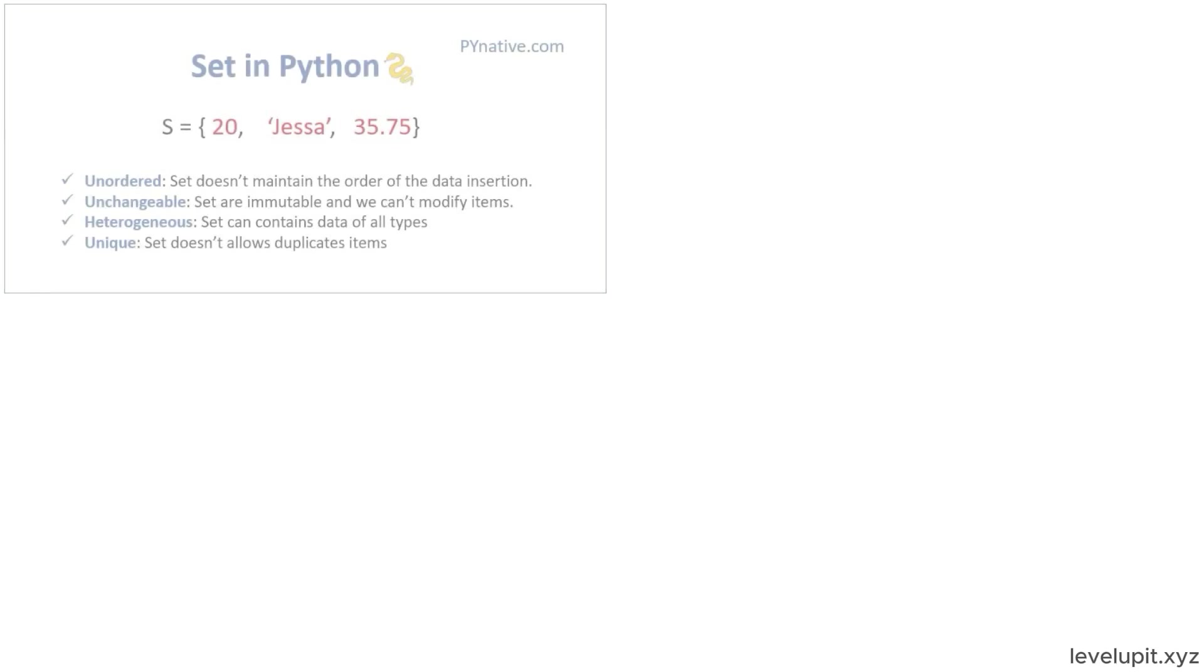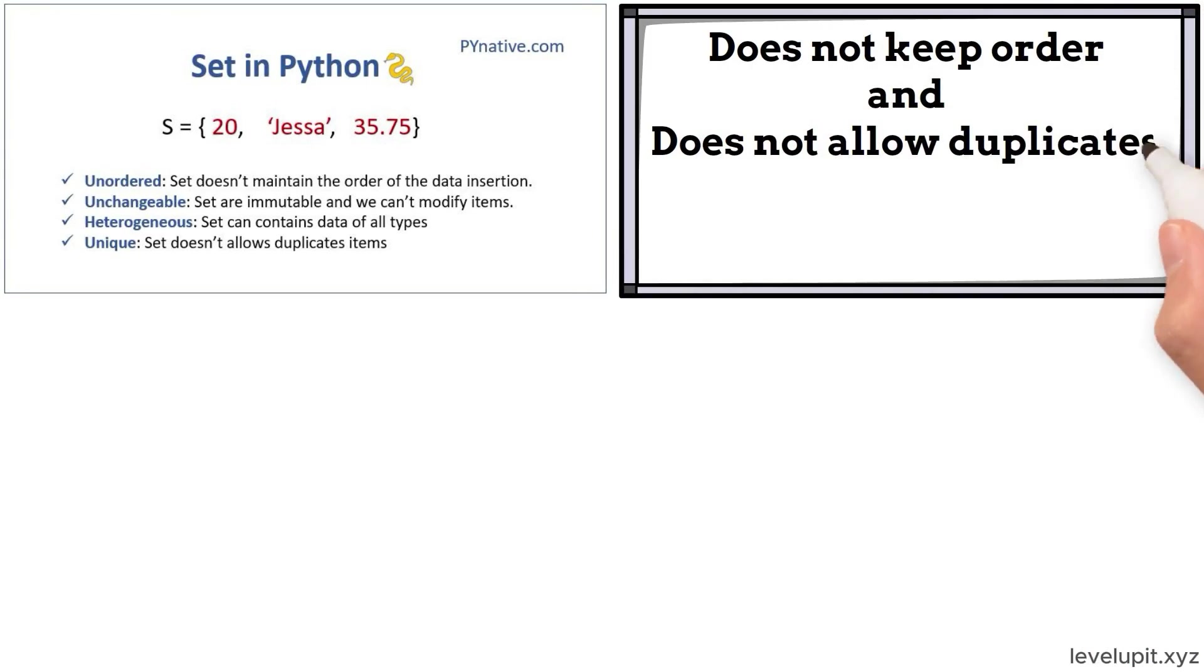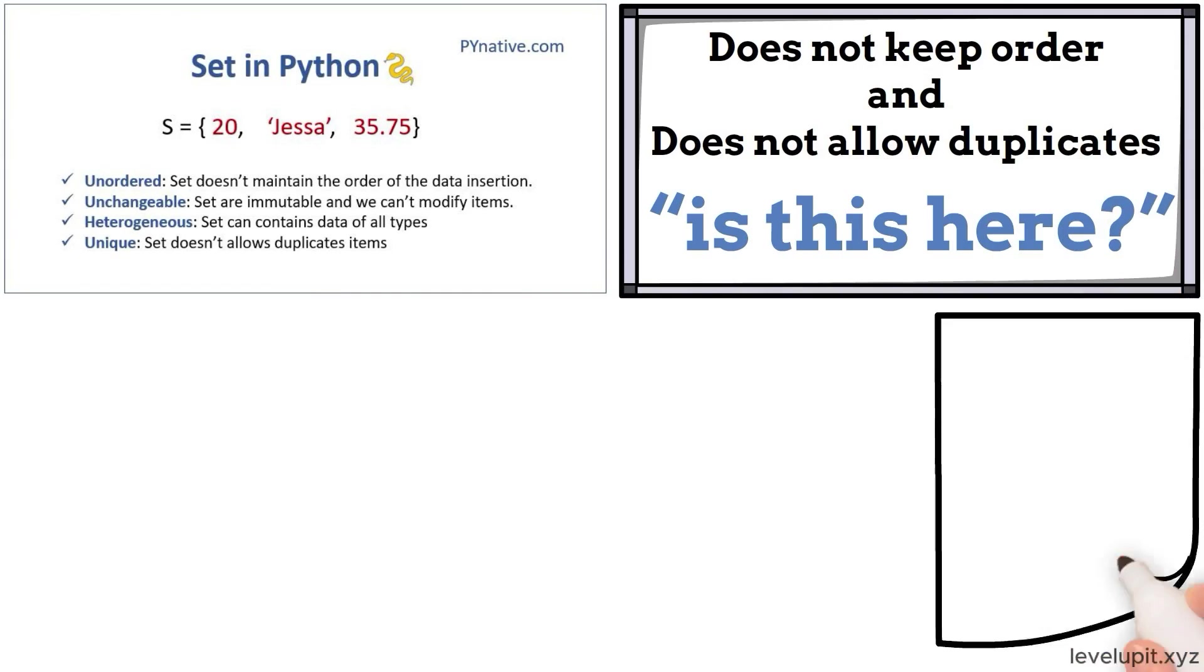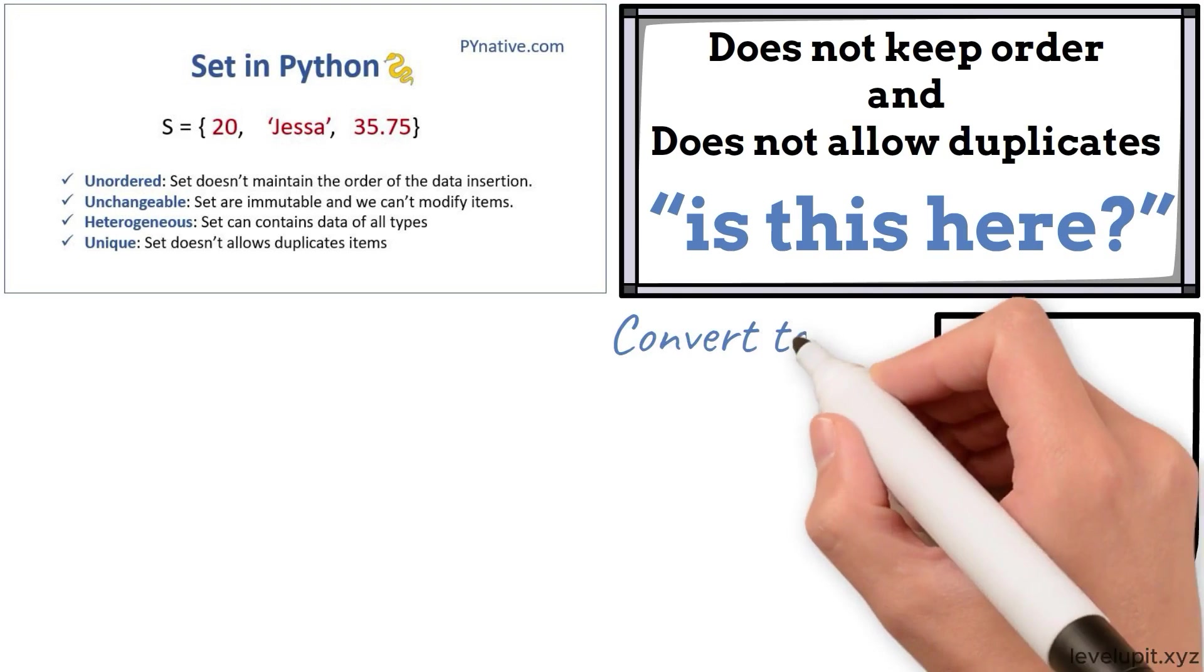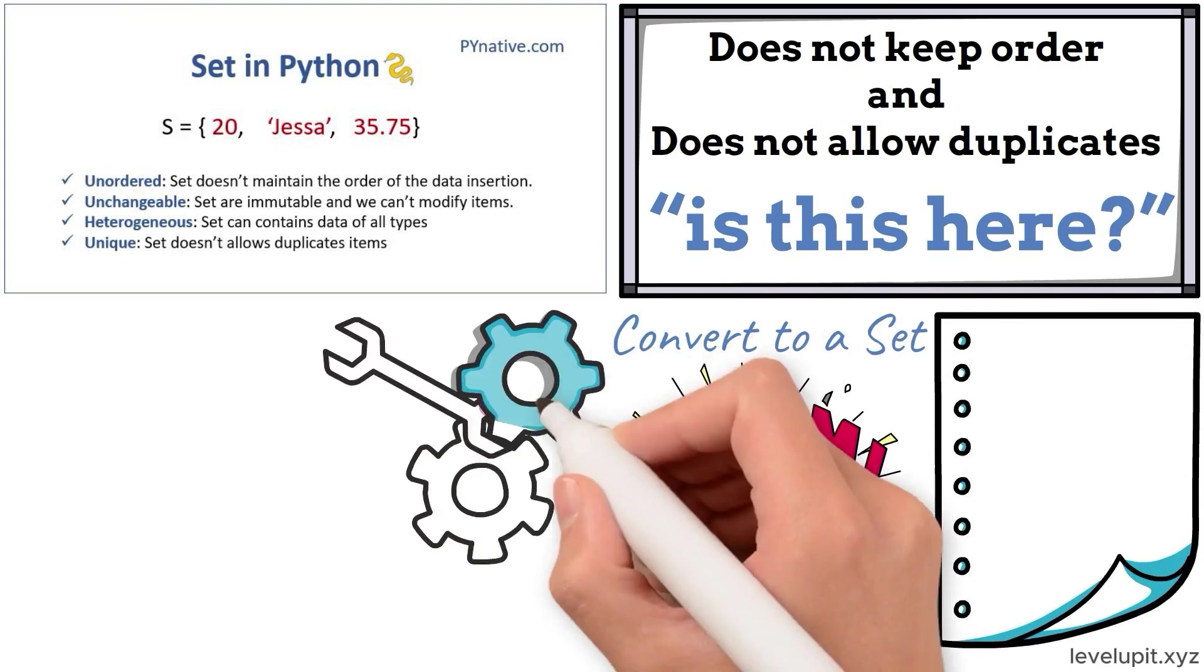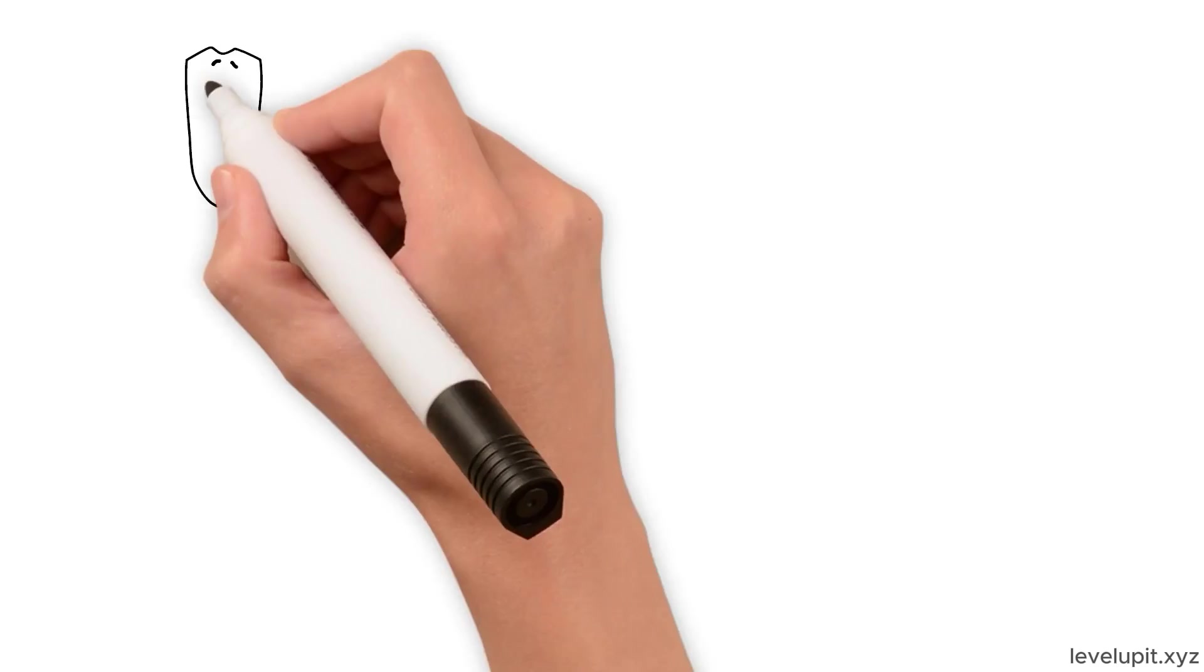Sets are the best way to handle uniqueness. A set doesn't keep order and doesn't allow duplicates, but it answers 'is this here' very quickly. If you have a list of emails with repeats and you want only unique addresses, convert to a set and the duplicates vanish. If a pipeline shouldn't reprocess the same file twice, keep a set of completed file IDs to skip repeats.